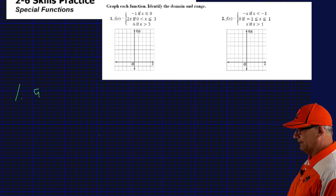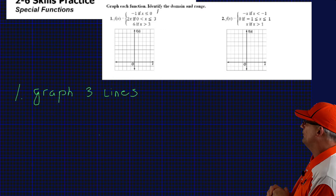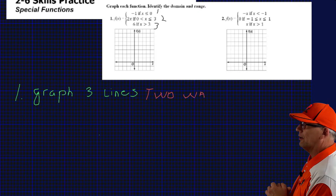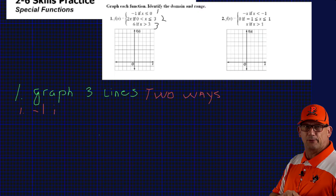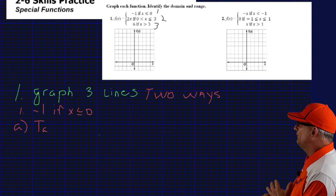Okay, so take a look at number 1. You may not have seen graphs such as this, but all we're going to do is take each one of these equations and graph one line for each of them on the same graph. We're going to utilize the inequality signs to know where to start and stop our line. So the inequalities will tell us where to start and stop the three lines.